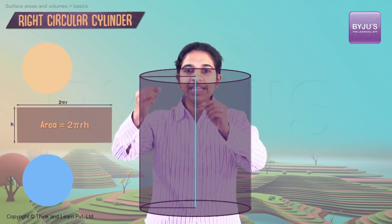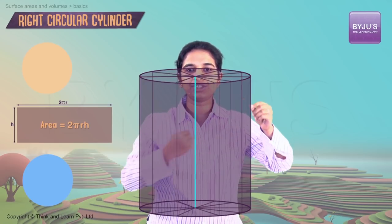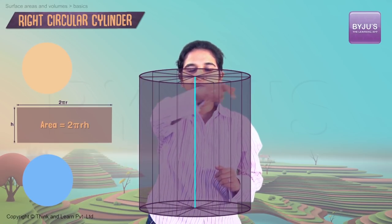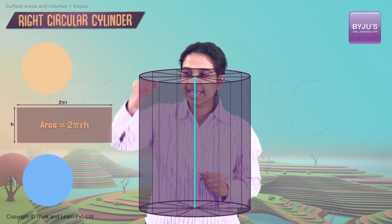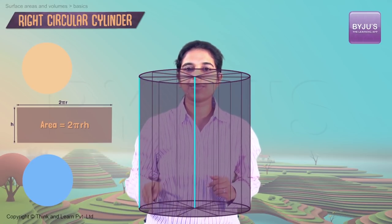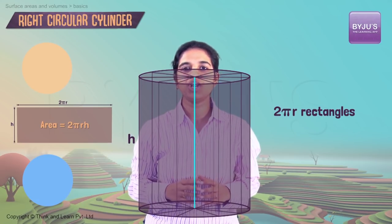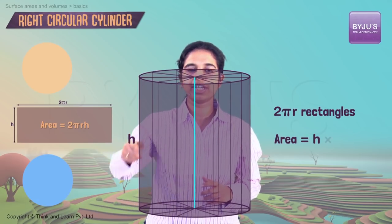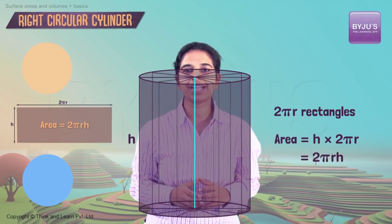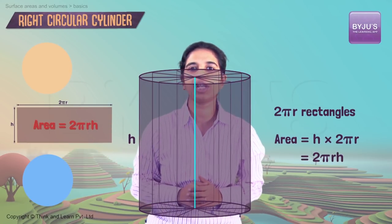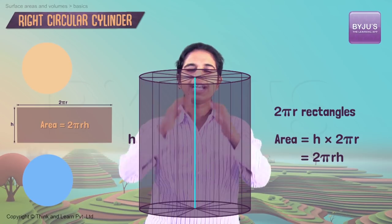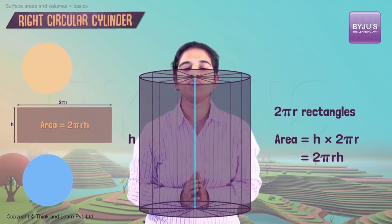Now if you assume this rectangle to have a thickness 1, we need 2πr such rectangles to form the cylinder. The area of this face is nothing but h, and there are 2πr such rectangles that have been placed around. So the total area will be h into 2πr, 2πrh, exactly the same as what we got before. This is just another way to visualize it.